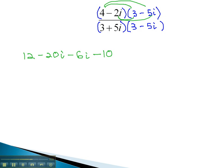Let's go ahead and combine these like terms. 12 minus 10 is going to be 2. Negative 20i minus 6i is negative 26i.